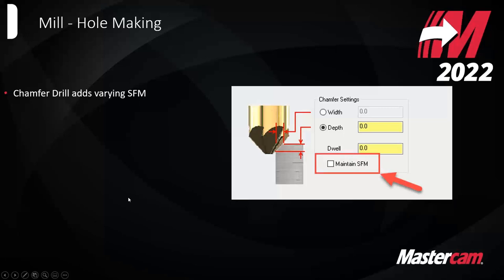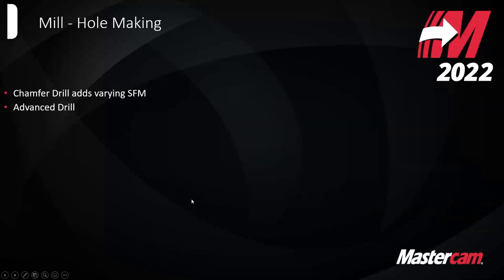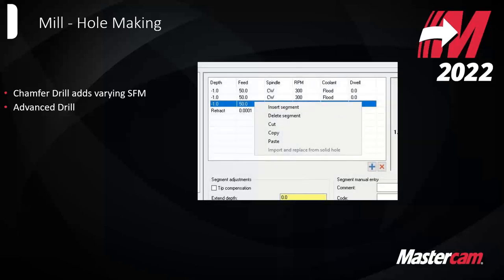The chamfer drill is now also limited to the max spindle speed defined in your machine definition. We've also made a lot of improvements to advanced drill. Anyone who got used to using that in 2021, it's only going to be better in 2022. You're now able to copy and paste segments so common parameters don't need to be re-adjusted. For a deep hole drill where you're keeping feed and RPM the same throughout different segments but making coolant or dwell adjustments, you can copy segments down and just make the small adjustments needed.